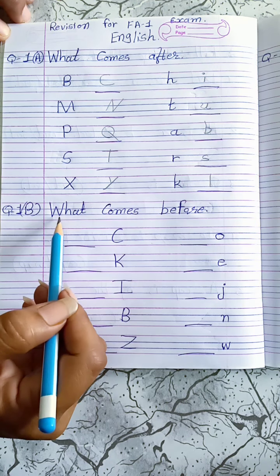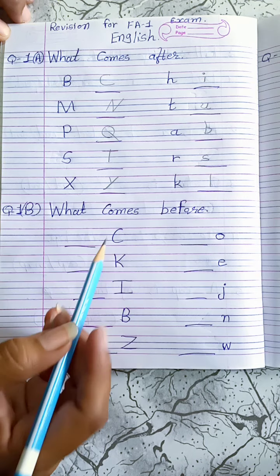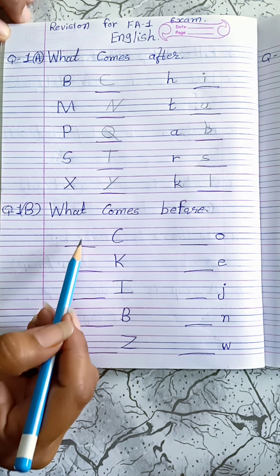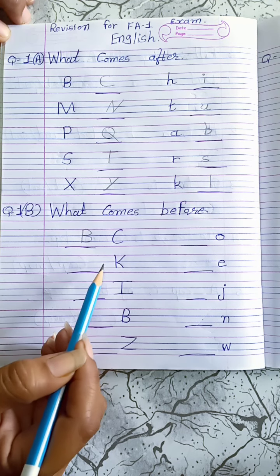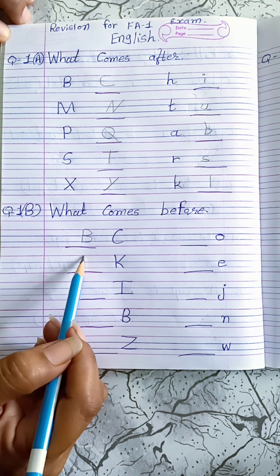Now, question 1B: What comes before? What comes before C? B. What comes before K? J.